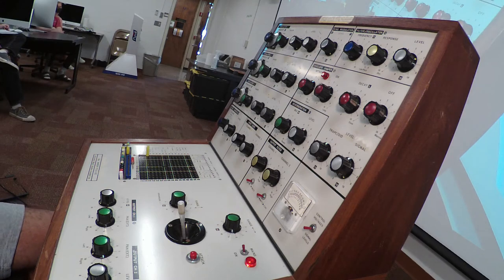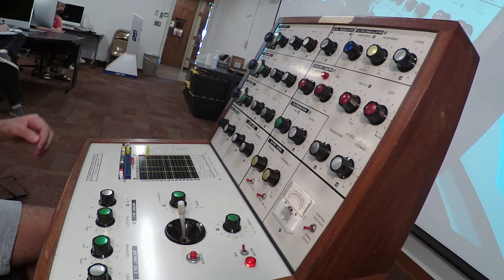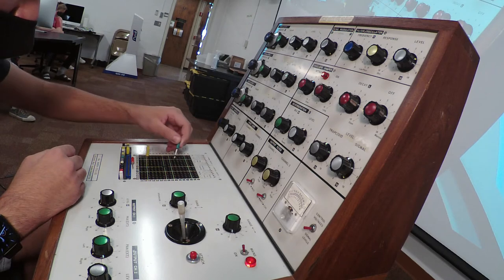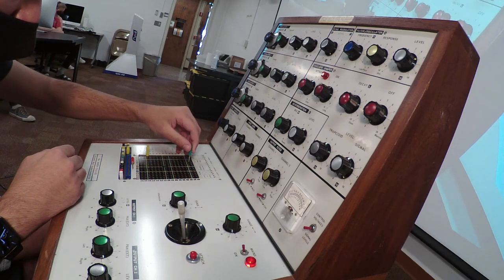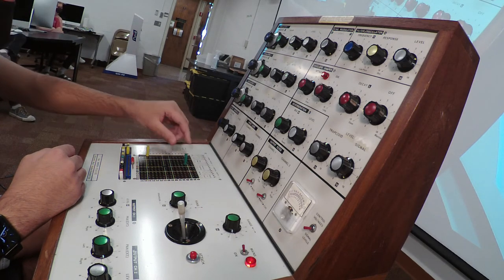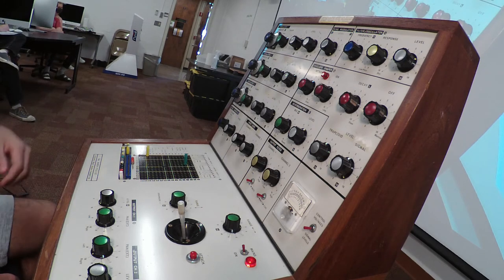So you've got A14. Go ahead and connect G3. And this is going to give us a slowly modulating oscillator. And go ahead and connect I6.